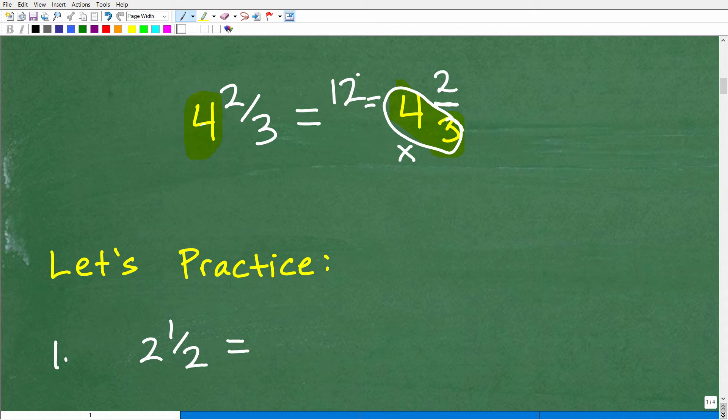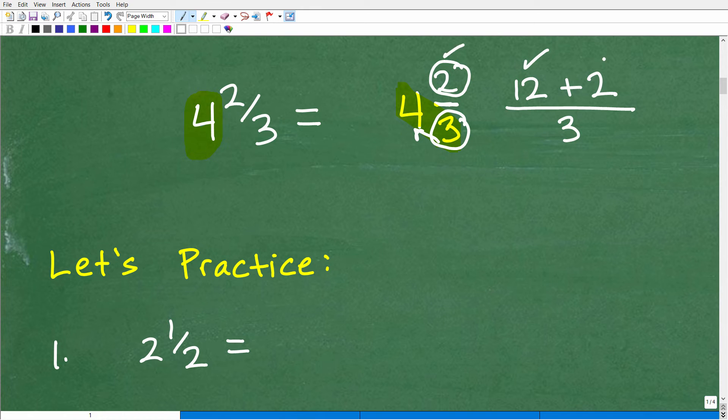And then we're going to add this top number, okay? So I don't want to write this where it's confusing. I think it's just easier for me to just show you. So three times four is 12, okay? We'll put that there. And then we add this number, two. That is our numerator. And then we just keep this as our denominator, okay? So three times four is 12, plus this little number right here, two, is going to be 14 over three, okay?